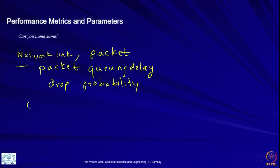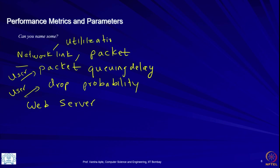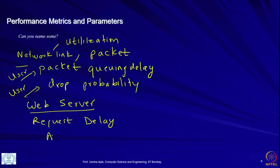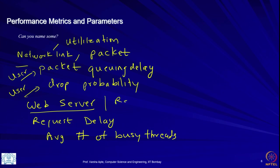For the web server system, the link utilization — what fraction of time the link was busy — is a system metric. The web server request response time, how long it took for the request to finish, is a user metric. We can also have the average number of busy threads as a metric. A parameter could be the rate of arrival of requests.